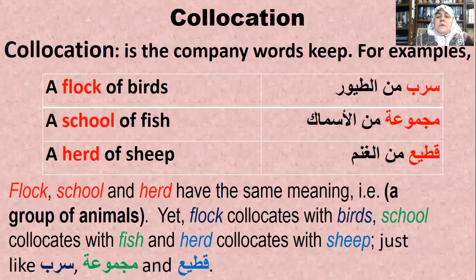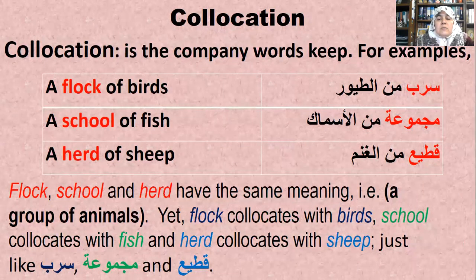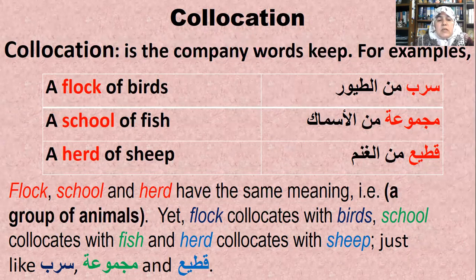Collocation is another important semantic element in translation. Collocation is the company words keep. For example, 'a flock of birds' (sirb min al-toyour), 'a school of fish' (majmu'a min al-asmar), 'a herd of sheep' (qati'a min al-ghnam). The words flock, school, and herd actually have the same general meaning — a group of animals — but with birds we use 'flock,' with fish we use 'school,' and with sheep we use 'herd.' This is a feature of language which exists in Arabic as well.